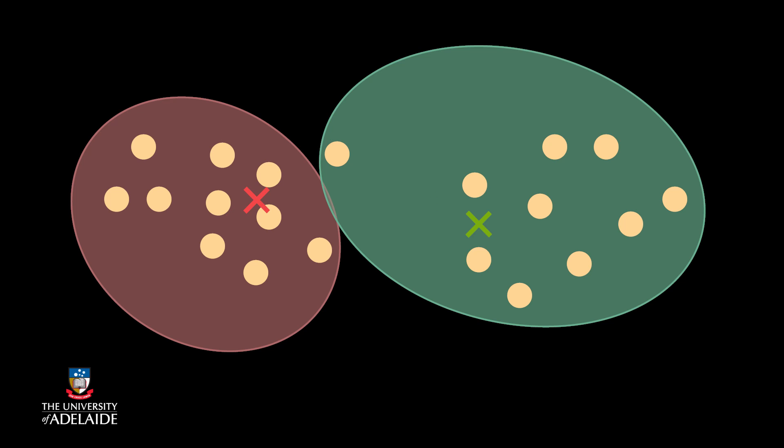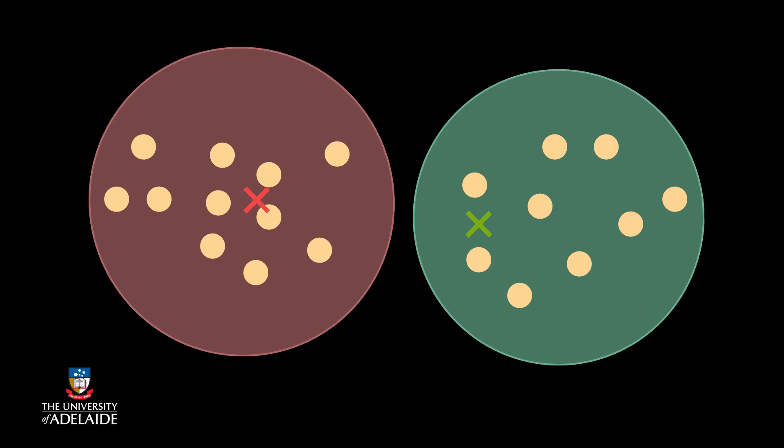The algorithm repeats these two steps — assignment and then update — one more time, and this achieves a stable clustering arrangement. As you can see, the final step only updates the position of the centroids, and the points within each cluster do not change. This is how I know that the algorithm has reached a stable position, and it means that I can stop the algorithm here.